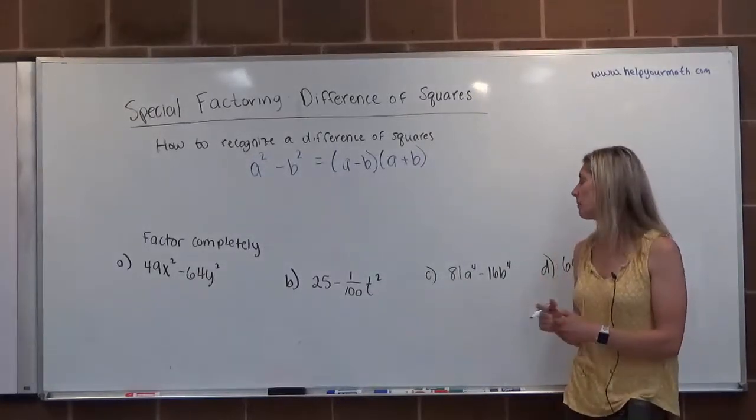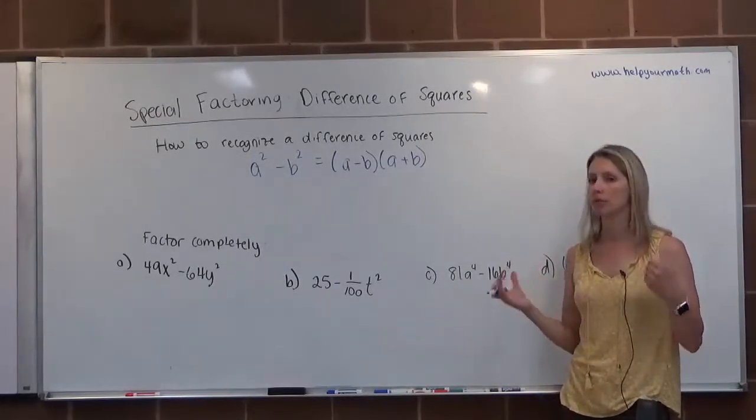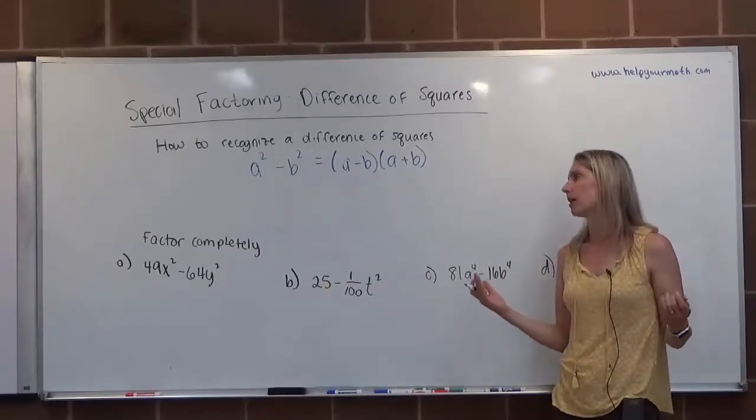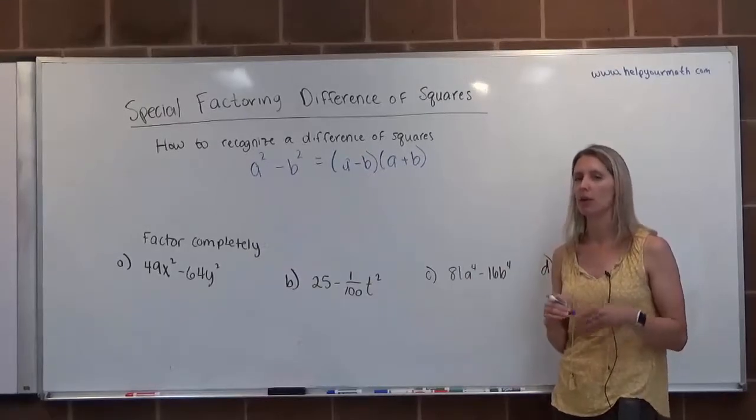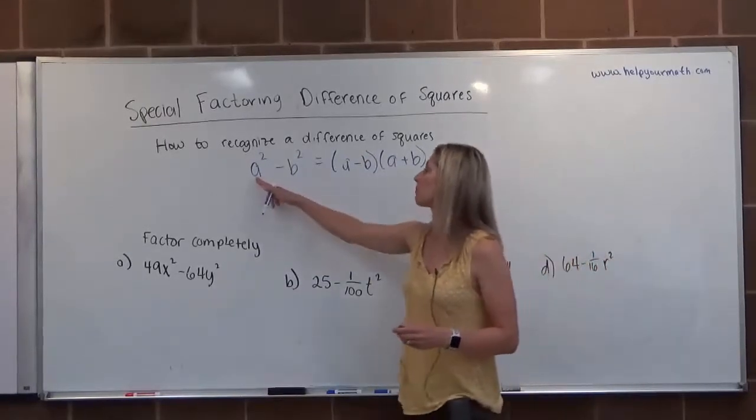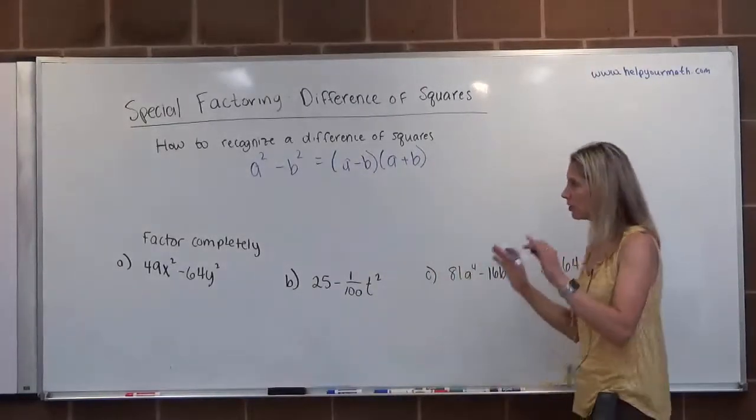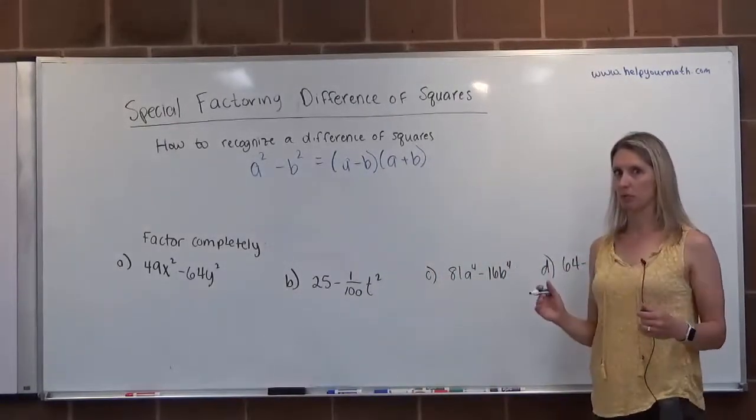It's also really important to note that there is no such thing as factoring a sum of squares, at least not in the real number system. So if it's perfect square, perfect square in addition, it's not factorable. Just keep that in mind. It only works when it's subtraction.